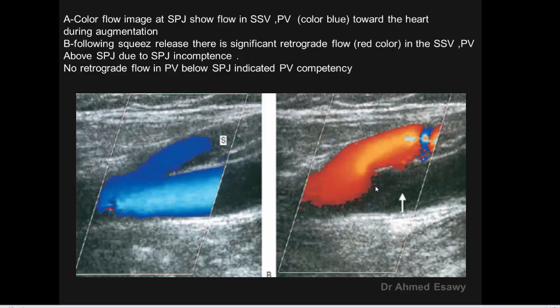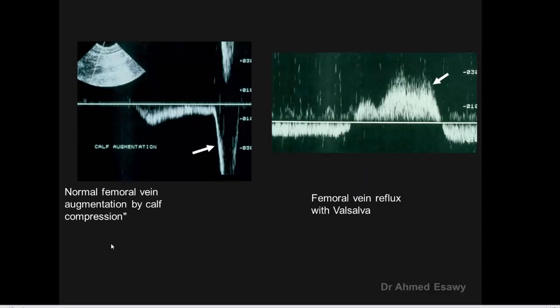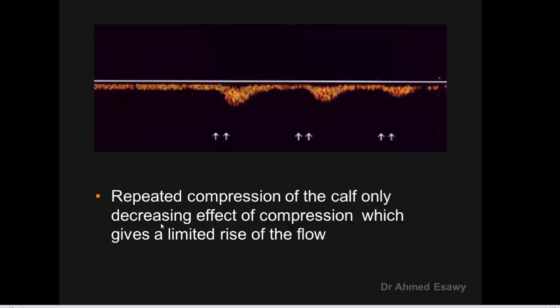A rapid important augmentation of venous flow can be caused by short vigorous compression of the calf, implying normal patency. This is normal femoral vein augmentation by calf compression. An important tip: do not repeat augmentation — do not repeat compression — because repeated compression decreases the effect, giving only a limited rise of flow.